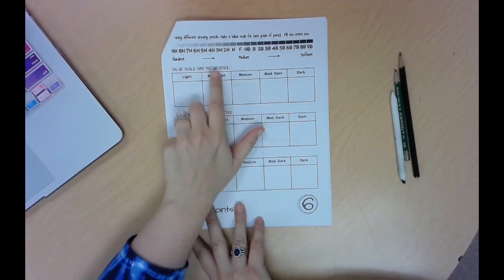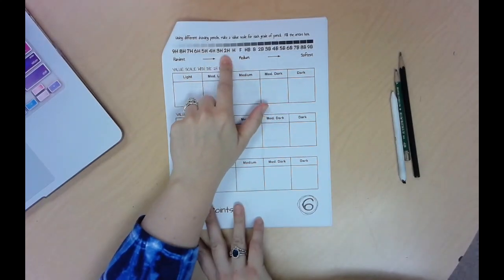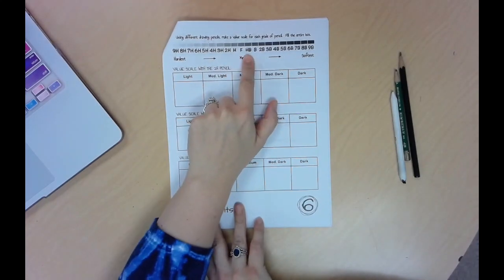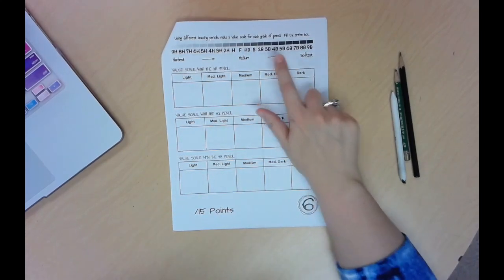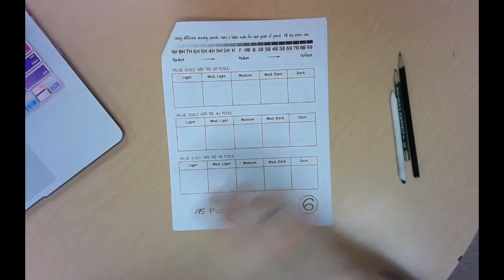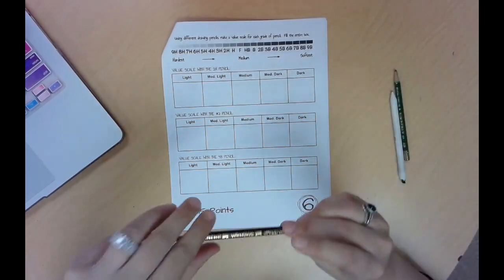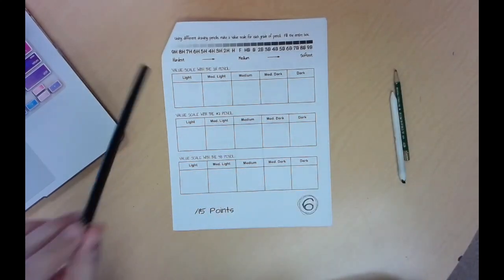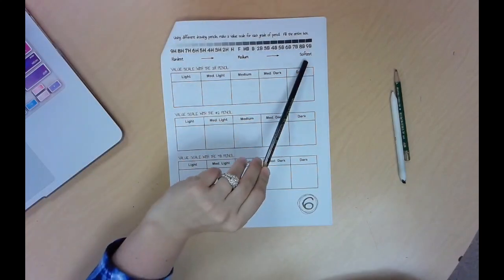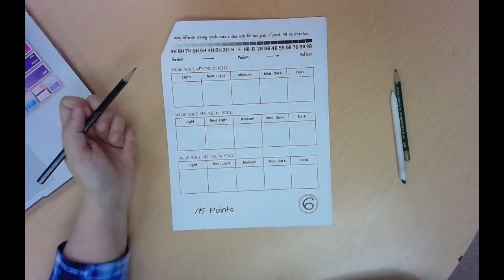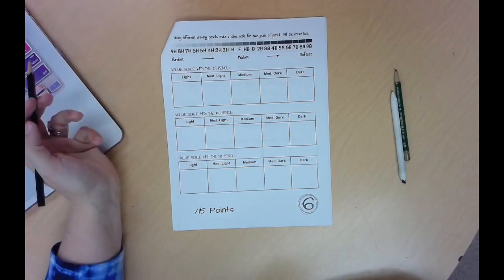So we're going to use a light pencil, we're going to use a 2H. We're going to use a medium pencil, we're going to use an HB, and we're going to use a soft pencil, we're going to use a 4B. So those are the only three we're going to use. Now the reason we use different drawing pencils is because some are harder and some are softer. The harder ones are lighter, the softer ones are darker. And the reason you use those is to get different values when you're creating a drawing.